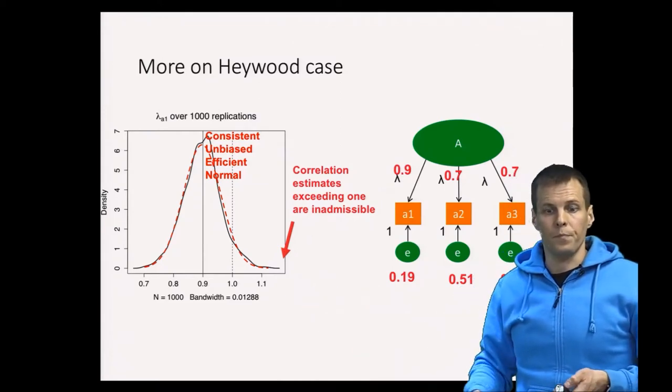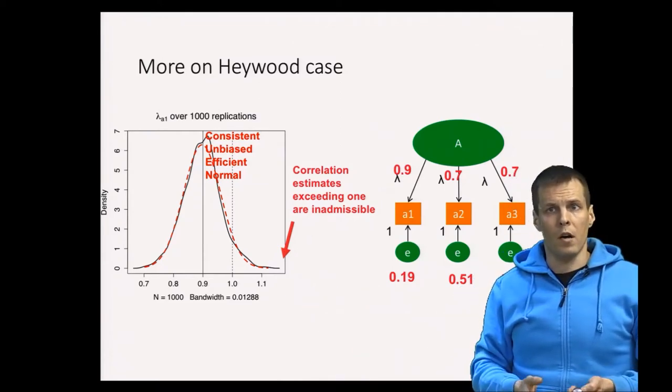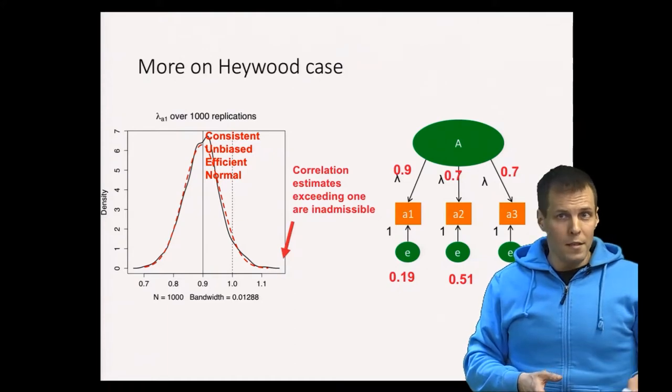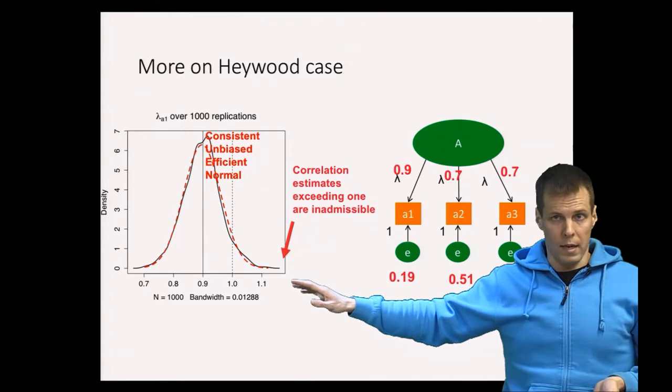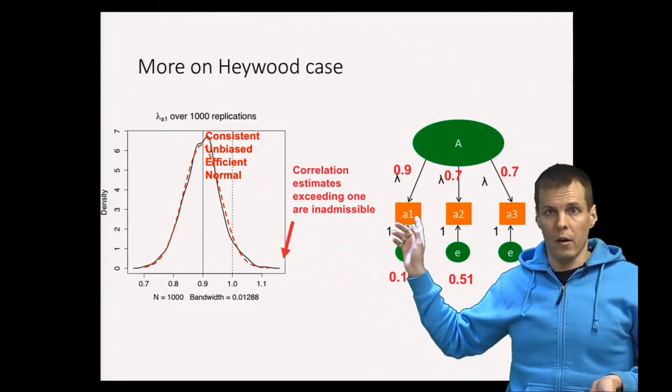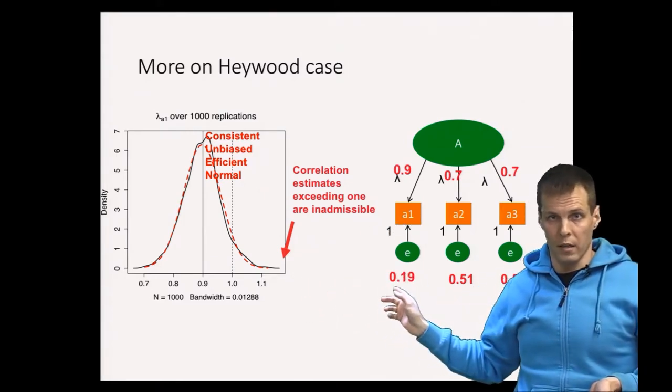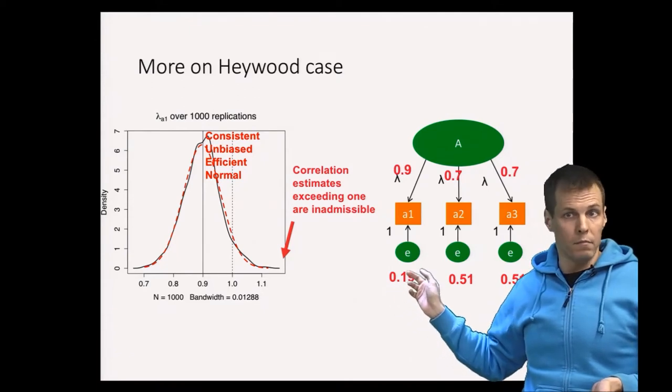So what do you do about it? Well there are two things that can cause Heywood case. One thing is a small sample highly reliable indicator and small sample we could estimate this 0.19 as being negative.